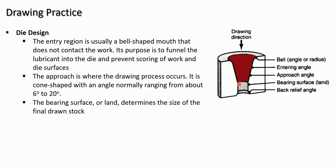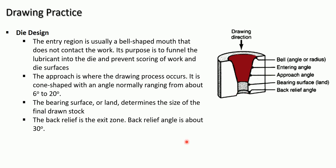After the approach, there is the bearing surface, also called land. The bearing surface or land determines the size of the final drawn product. This bearing surface has a section exactly the same as the product to be drawn, so the shape of the drawn product depends on the section of this bearing surface. After that, the back relief region is the exit zone through which the drawn object comes out from the draw die. The back relief angle is about 30 degrees.